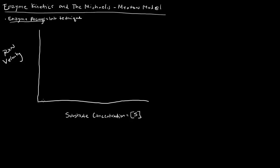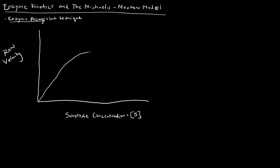For a particular reaction, there's this example: chymotrypsin, which is a protease - an enzyme that breaks up proteins. If we graph its velocity over the substrate concentration, what we get is a graph that kind of looks like this.